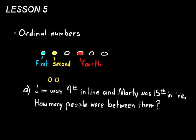Let's do a practice problem using ordinal numbers. Jim was fourth in line and Marty was fifteenth in line. How many people were between them? You don't need to write down the problem — just work on the answer. The best way to do this problem and avoid mistakes is to draw yourself a diagram.